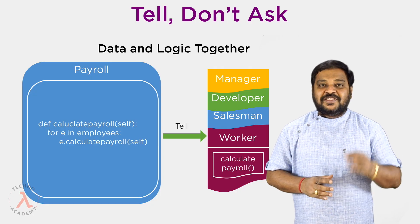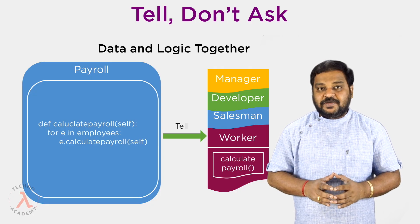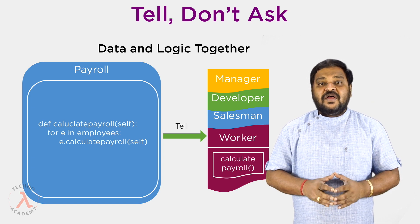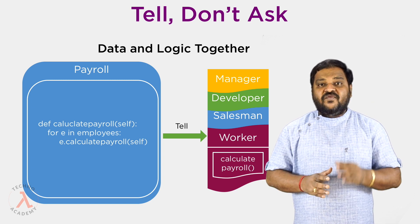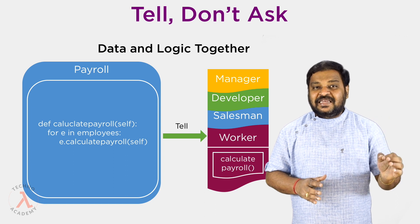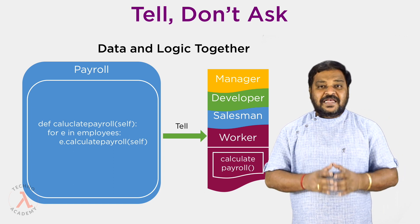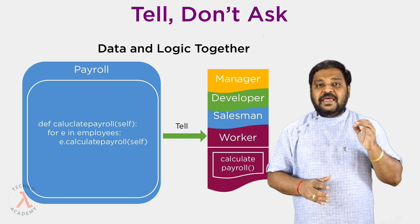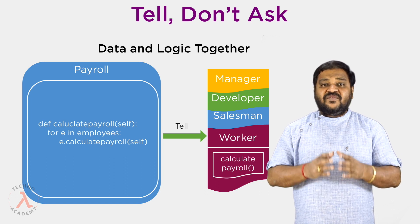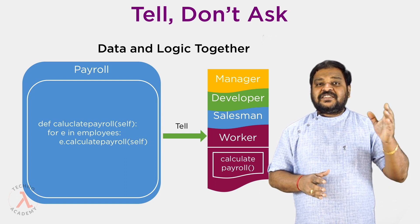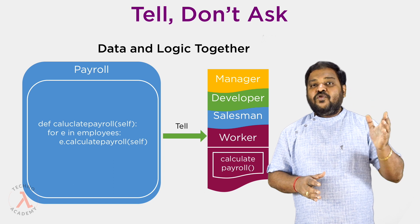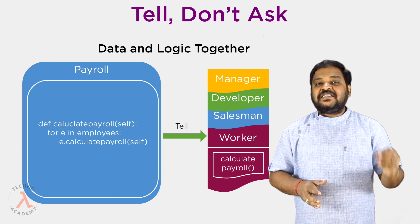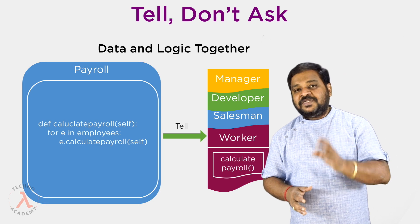I hope you have now understood the Liskov Substitution Principle. The Tell Don't Ask principle is a great way to implement it. Finally, whenever you implement an interface or inherit from a base class, make sure you fully implement it. In the next video, let us understand the fourth principle in SOLID — the Interface Segregation Principle.